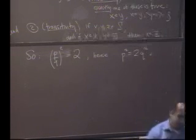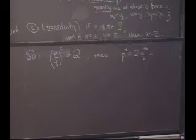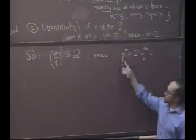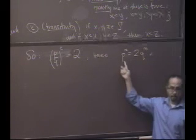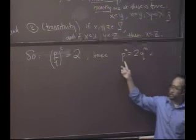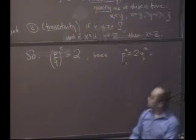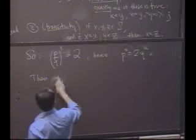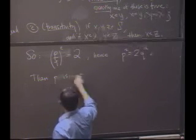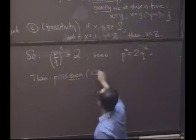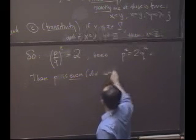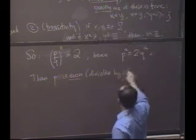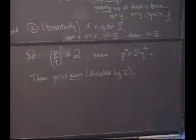P squared equals 2Q squared. So what can I conclude about the number P? It's even because it is divisible by 2. Then P is even. And I'll say it this way because this might be a better way of thinking about it. It's divisible by 2. Why is P even?